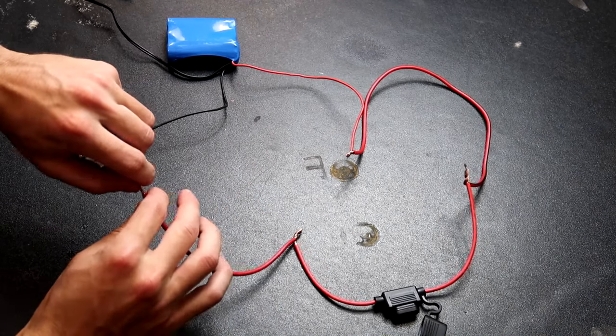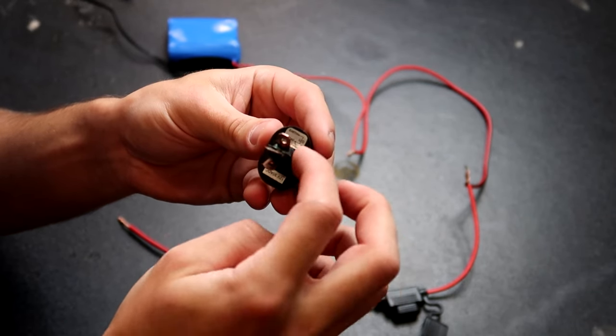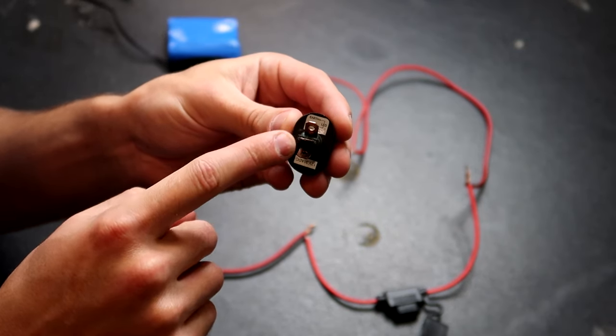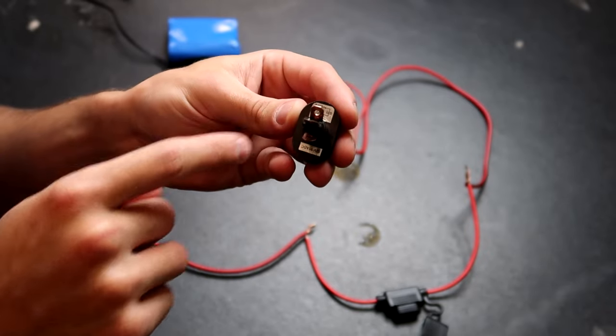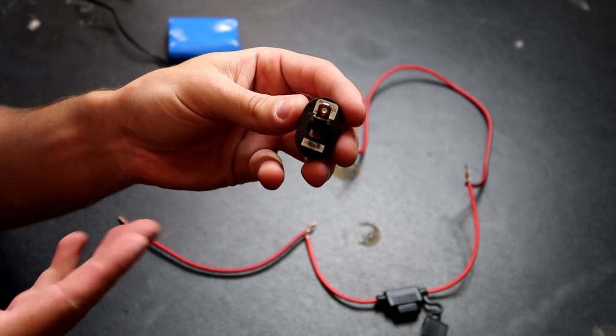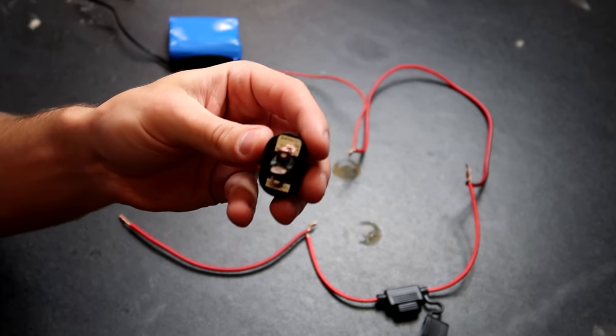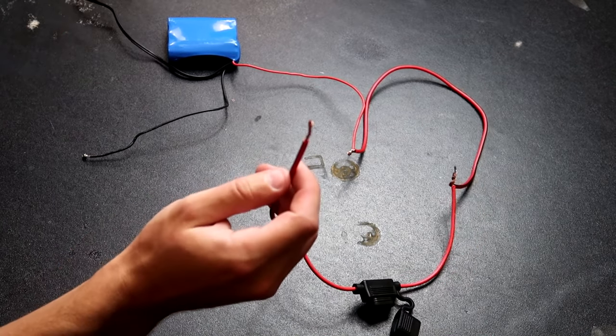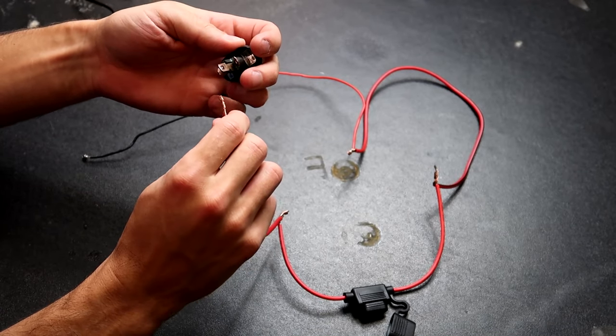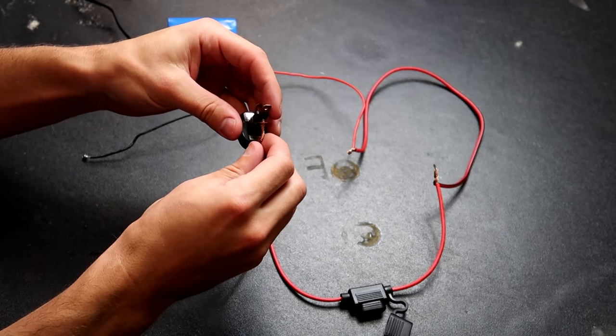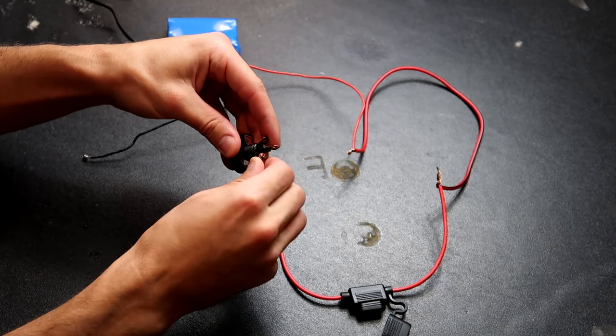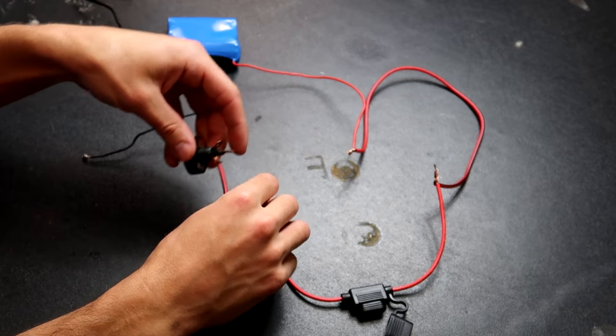So we're going to get our switch. On the switch it says earth, load, and supply. Earth is ground. Supply is where your battery is going to go into, and load is what you're going to hook up, like if you're going to put a light or something on there. So get this positive and attach it to the supply, just like that.